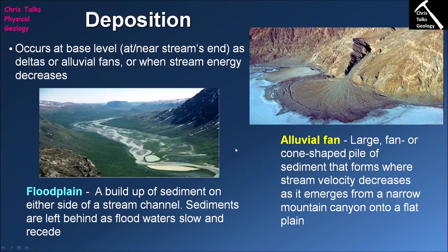Deltas are not the only indication of a river approaching its base level; floodplains and alluvial fans also show that a river is approaching its base level, whether that is the ultimate base level of sea level or some local base level. It should be noted that alluvial fans are associated with arid and semi-arid terrains only — you don't tend to get them in other terrain types such as mature river systems. Thank you for watching everybody, and have a good day.